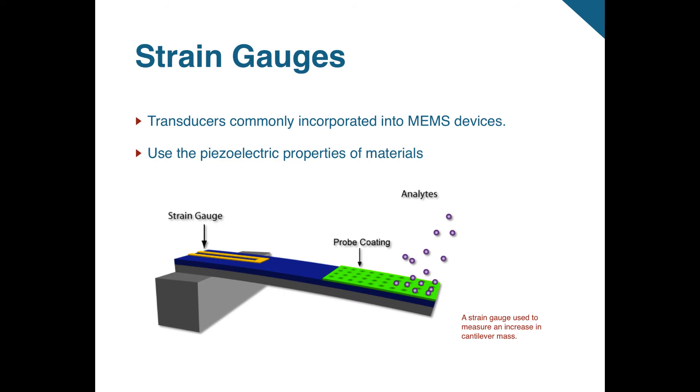Here is an example of a strain gauge at work. Strain gauges are commonly incorporated into MEMS devices, such as pressure sensors and micro-cantilevers. MEMS strain gauges use the piezoelectric properties of metals and other materials to change the resistance of the material when the strain gauge is stretched due to mechanical movement, stress, or strain. This image shows a micro-cantilever with a strain gauge used to measure an increase in cantilever mass. As the analytes, or particles being analyzed, attach to the probe coating on the cantilever, the mass of the cantilever increases, causing the cantilever to bend and the strain of the gauge to lengthen. This changes the resistance of the gauge, and thus the amount of current flowing through it. This change in current is proportional to the change in the cantilever's mass.